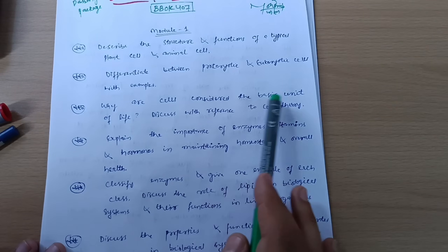First question from Module 1 is: describe the structure and functions of a typical plant cell and animal cell. Differentiate between prokaryotic and eukaryotic cells with examples.